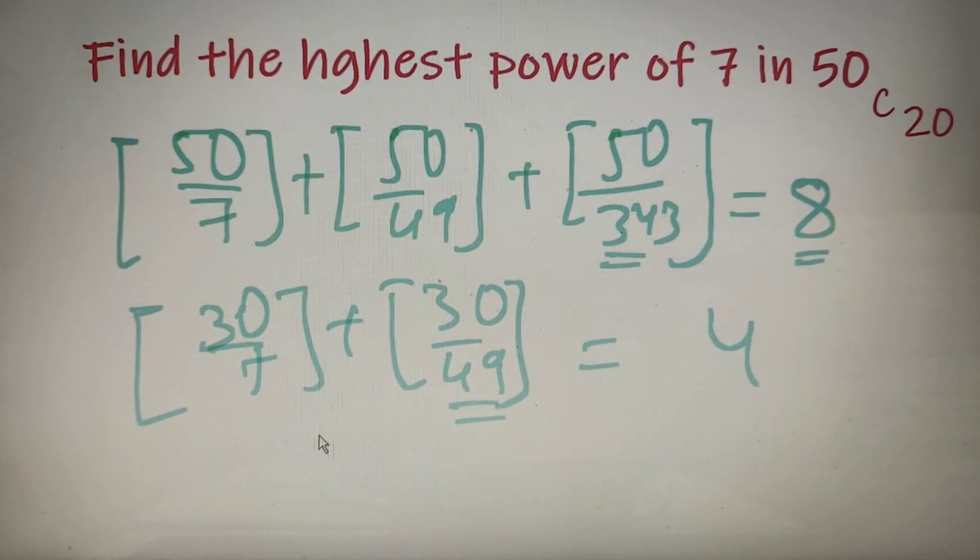Finally, we'll find out the highest power of 7 in 20 factorial, which is equal to the greatest integer value of 20 by 7 plus greatest integer value of 20 divided by 49, and upon calculation this value comes out to be 2.